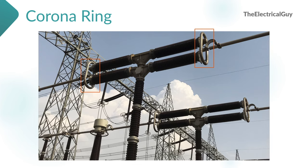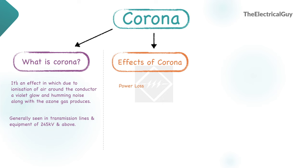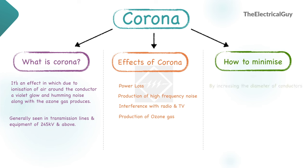So these are the ways to minimize the corona effect. Let's summarize: Corona is an effect in which, due to ionization of air around the conductor, a violet glow and humming noise along with ozone gas are produced. Corona is generally seen in transmission lines and equipment of 245kV and above. Corona can cause a lot of power loss and produces high-frequency noise which can interfere with nearby radio receivers and TV sets. Production of ozone gas can reduce the life of insulators and conductors. Corona can be minimized by increasing the diameter of the conductor or bundling conductors in sets of 2, 3, or 4 per phase; for high and extra high voltage equipment, corona rings can be used. You can take a screenshot of this summary slide, store it in your phone, share it with your friends, and read it whenever you want.